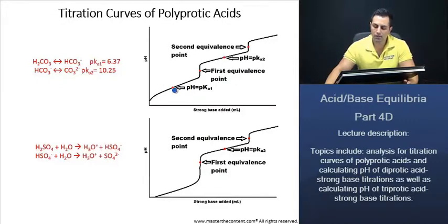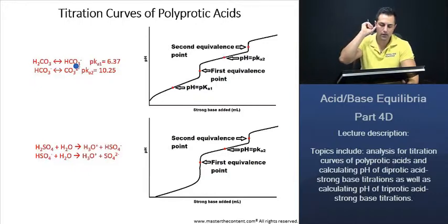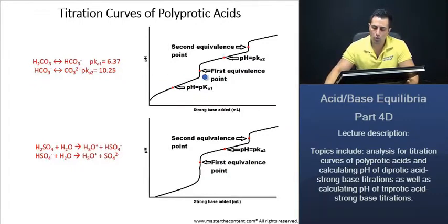Any pH above 6.37 in this region, we're going to have more bicarbonate. Now, when you're at your first equivalence point, right here, you're going to have no more carbonic acid. So you're going to have no more of this at all, and it's going to be 100% bicarbonate.